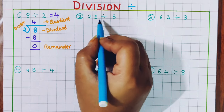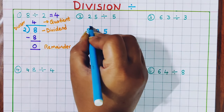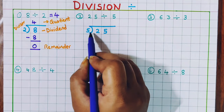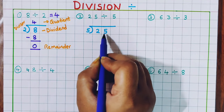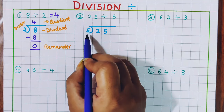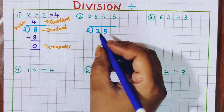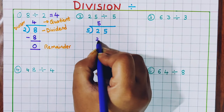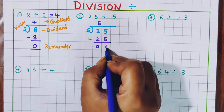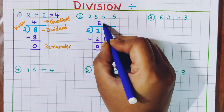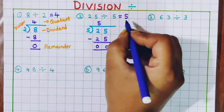Now let's see the next problem: 25 divided by 5. Now let's see the first digit — is 2 divisible by 5? No, 2 is a smaller number, so we will take 2 digits into consideration. Is 25 divisible by 5? Yes. Do we get 25 in the table of 5? Yes, 5 fives are 25. Then we will do minus and we get 0. The remainder is 0 and the quotient is 5. So 25 divided by 5, the answer is 5.